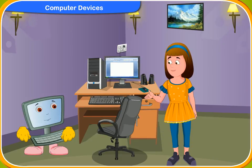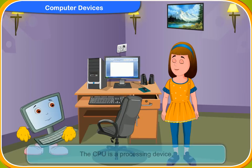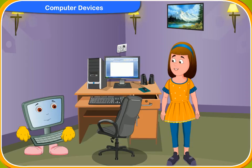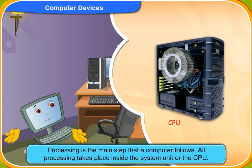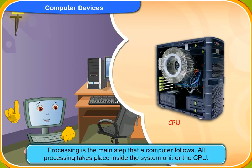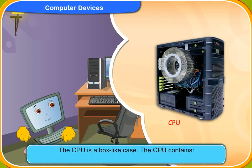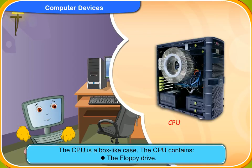What about the CPU? Is it also an output device? No, Rennie. The CPU is a processing device. Tell me more about the CPU. Processing is the main step that a computer follows. All processing takes place inside the system unit or the CPU. The CPU is a box-like case. It contains the hard disk, the motherboard, the CD drive and the floppy drive.